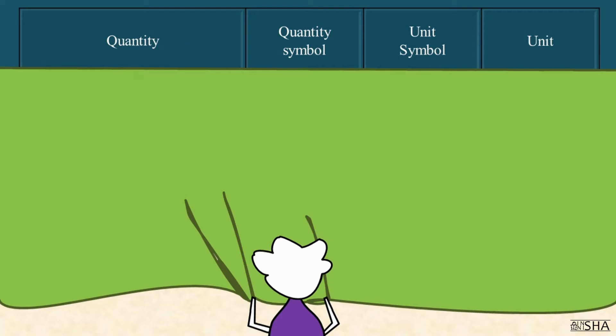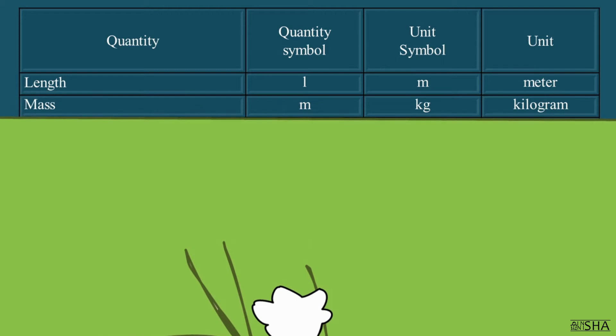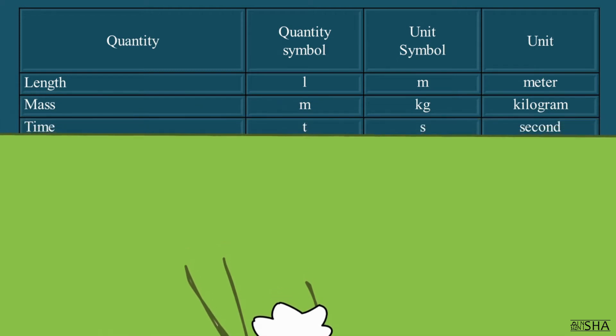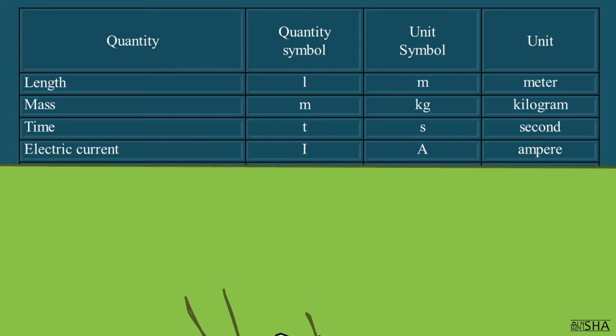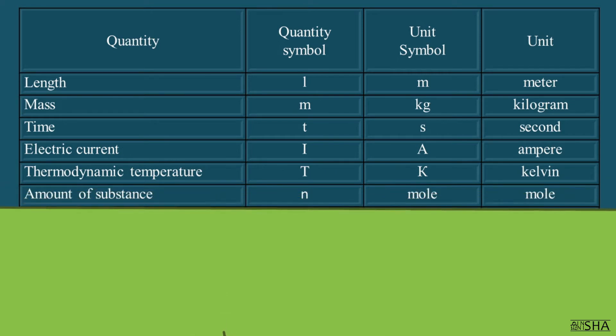So, the base units in the SI system are length, mass, time, electric current, the thermodynamic temperature, the amount of substance, and the luminous intensity.